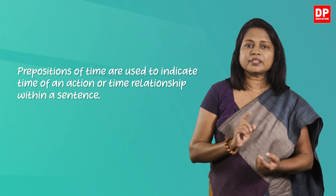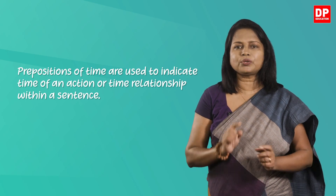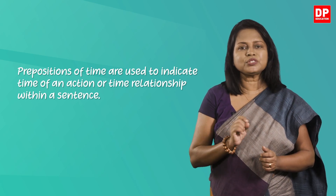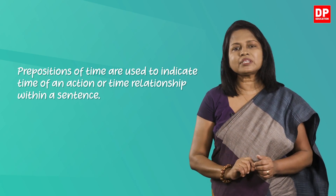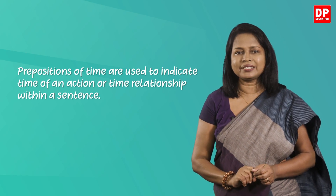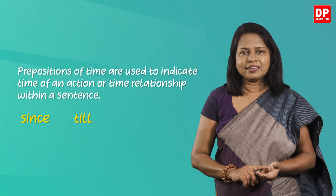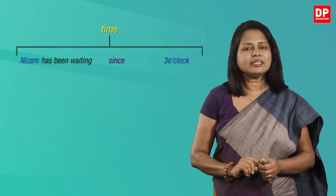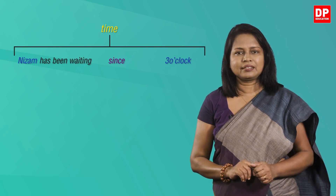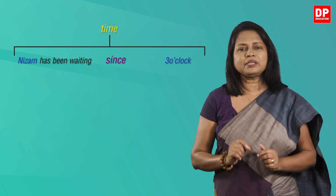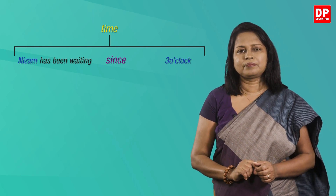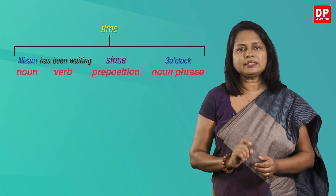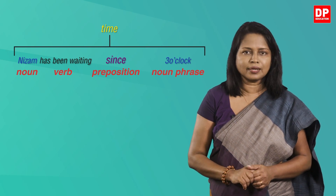Prepositions of time are used to indicate the time of an action or a time relationship within a sentence. As you have already learned some prepositions of time, today I'm focusing on these three prepositions of time only: since, till, and until. First let's learn about 'since'. Nizam has been waiting since three o'clock. So 'Nizam' is the noun, 'has been waiting' is the verb, 'since' is the preposition, and 'three o'clock' is the noun phrase.